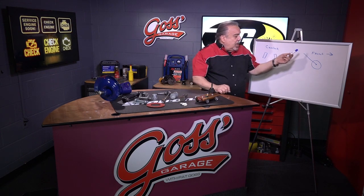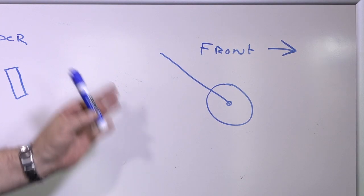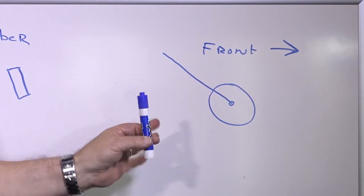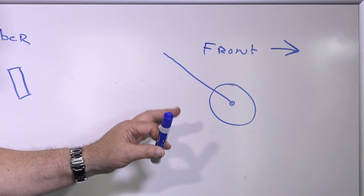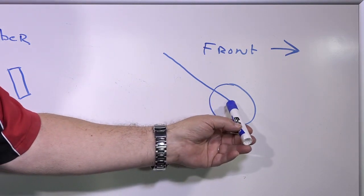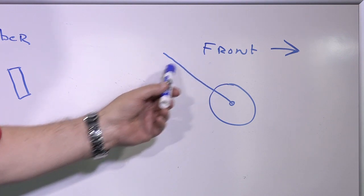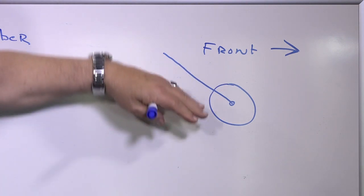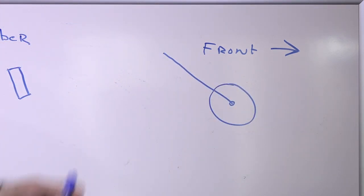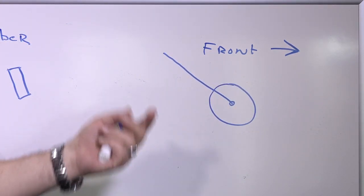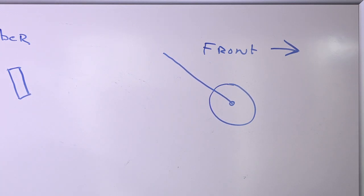The other thing is caster. The best way to envision caster is with a bicycle. A bicycle always has positive caster, meaning that the way the wheel is mounted relative to the chassis of the vehicle, the wheel is pushed out forward. This is what gives the car the ability to go around corners and return to center.